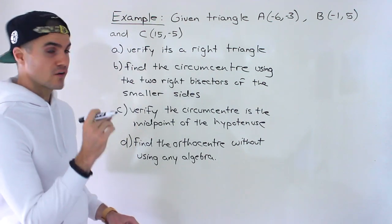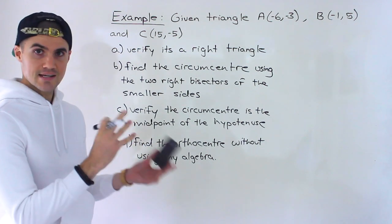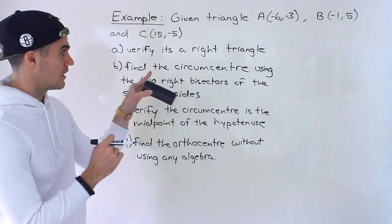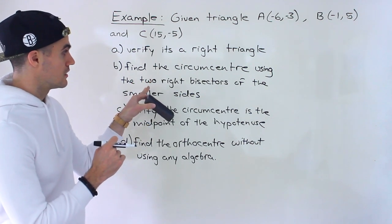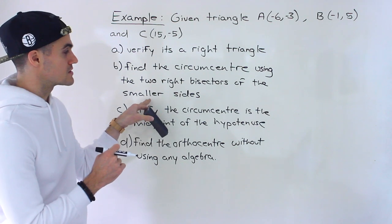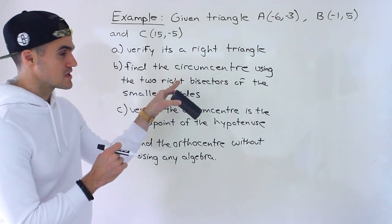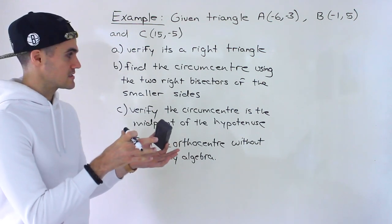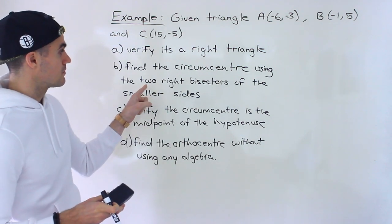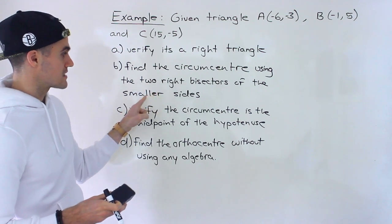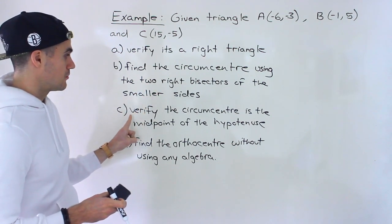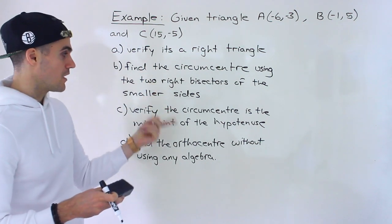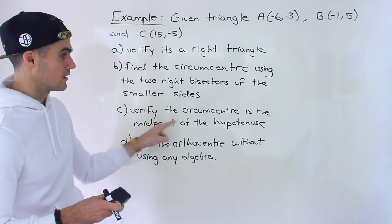In part A, we have to verify that it's a right triangle — that it contains an angle of 90 degrees. In part B, we have to find the circumcenter of this triangle using the two right bisectors of the smaller sides. The circumcenter is the point of intersection of all three perpendicular bisectors, but we're just going to use the two right bisectors of the smaller sides.